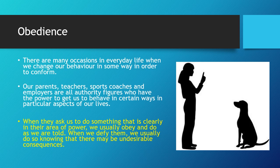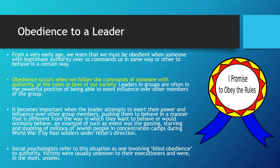When they ask us to do something that is clearly in their area of power, we usually obey and do as we are told. When we defy them, we usually do so knowing that there'll be undesirable consequences. Obedience occurs when we follow the commands of someone with authority or the rules or laws of society.